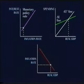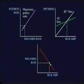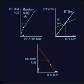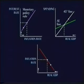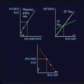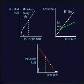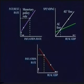Now let's put the pieces of the puzzle together. Imagine that the inflation rate rises by a certain amount. According to the Monetary Policy Rule, also known as Taylor's Rule, the Fed would then respond by raising the interest rate. This would cause the aggregate expenditure line to shift downward, resulting in a decline in real GDP.